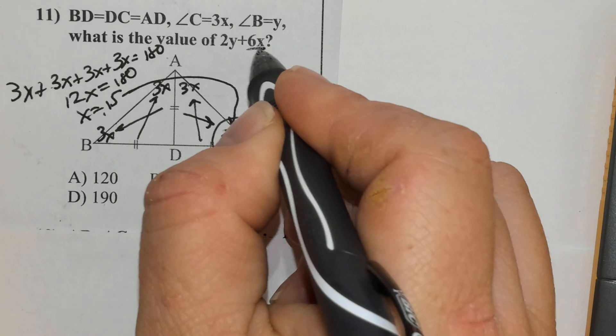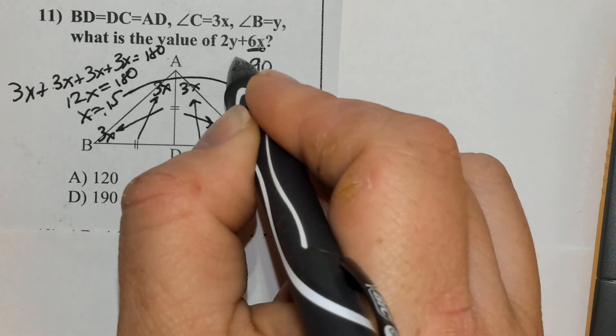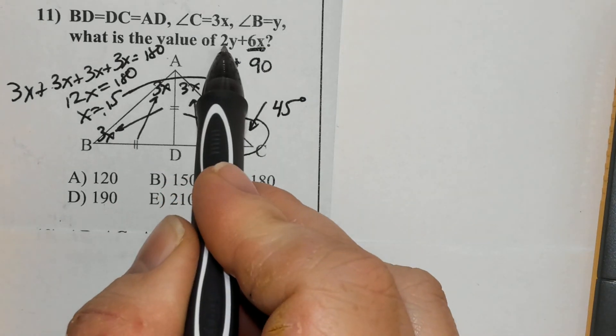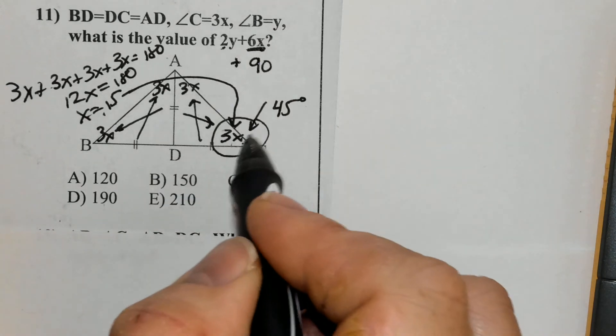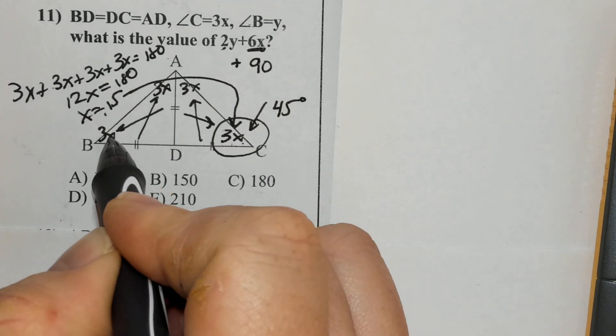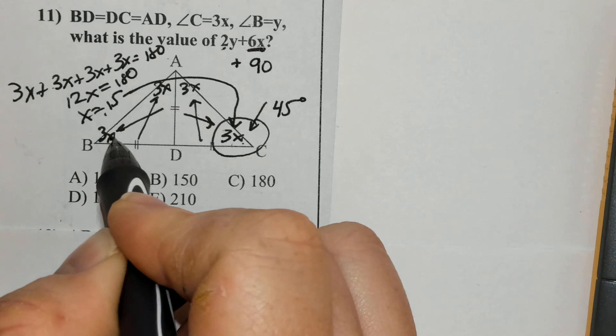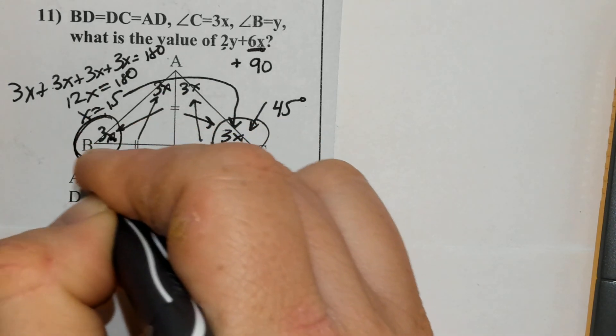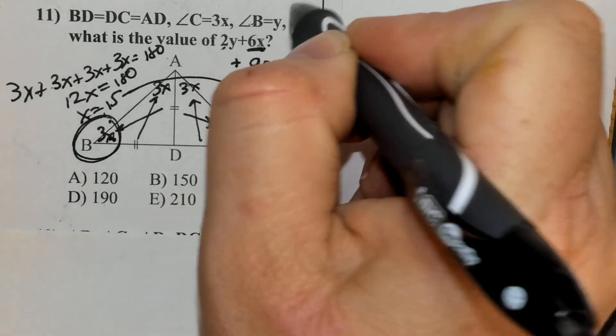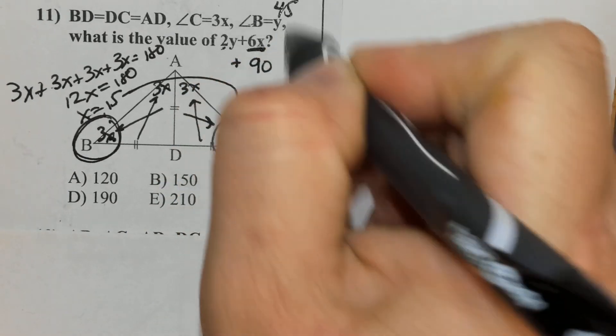Now what is y? It says angle B is y. And we know that x is 15. So 3 times 15 is 45. So angle B is not y. Angle B is 45 degrees.